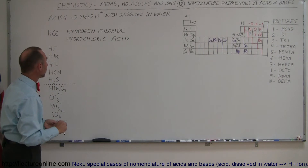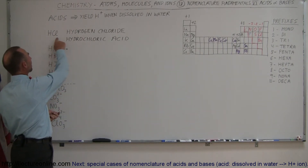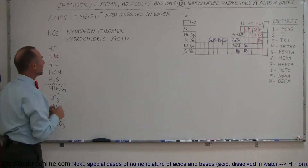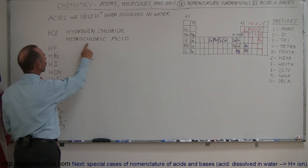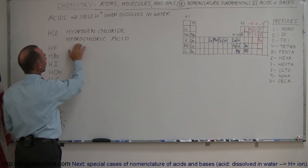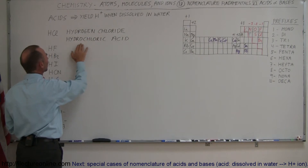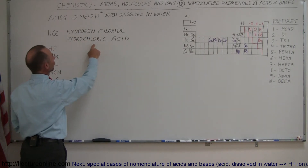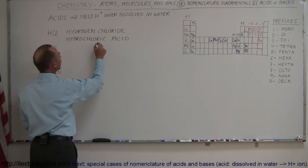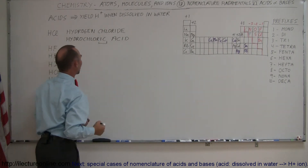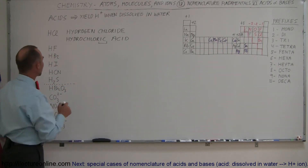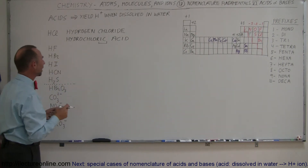For example, this compound here is called hydrogen chloride — that is the name we are used to giving it — but it is also called hydrochloric acid. Notice the difference: we still use 'hydro' at the start, but instead of saying 'hydrogen chloride' we say 'hydrochloric.' We take the second element, start with that name, put '-ic' behind it, and call it an acid. So hydrogen chloride is hydrochloric acid.